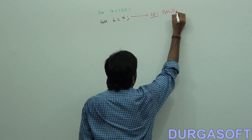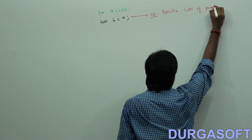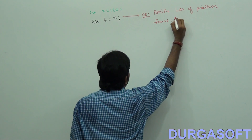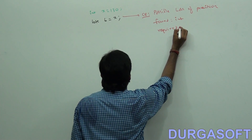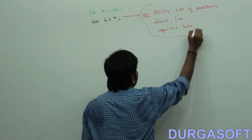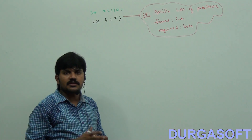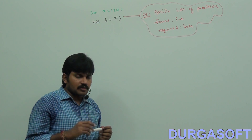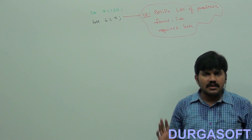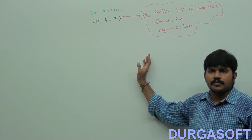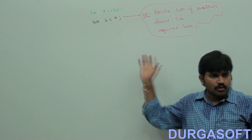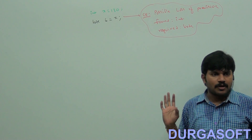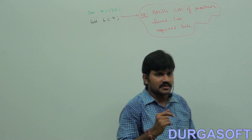The error says: 'possible loss of precision found int, but required is byte.' The compiler is telling very decently: there may be a chance of loss of information, I can't compile. Then I have to convey to the compiler: if any loss of information is there, I will take care — not required to worry. Can you please accept this code to compile?